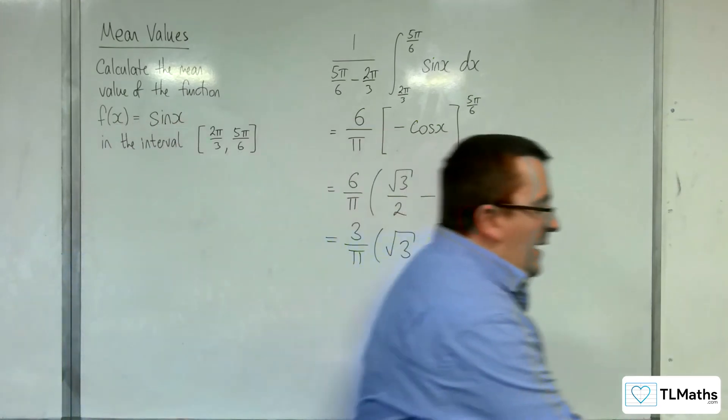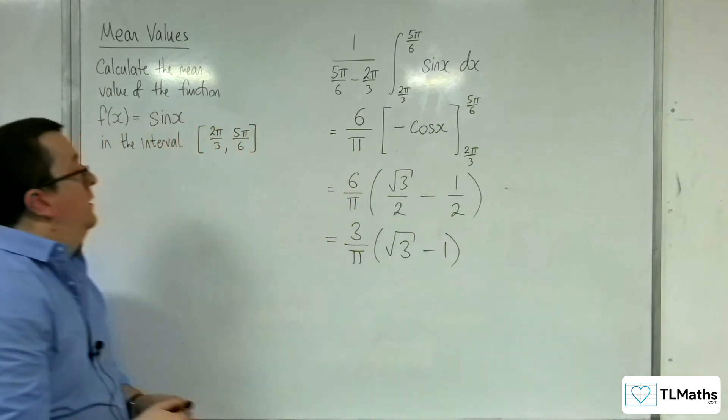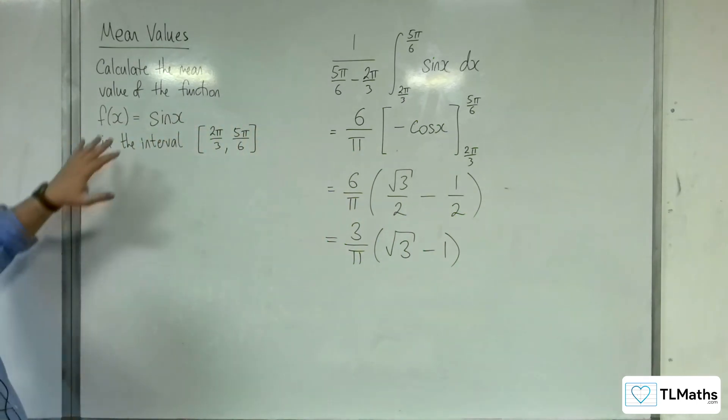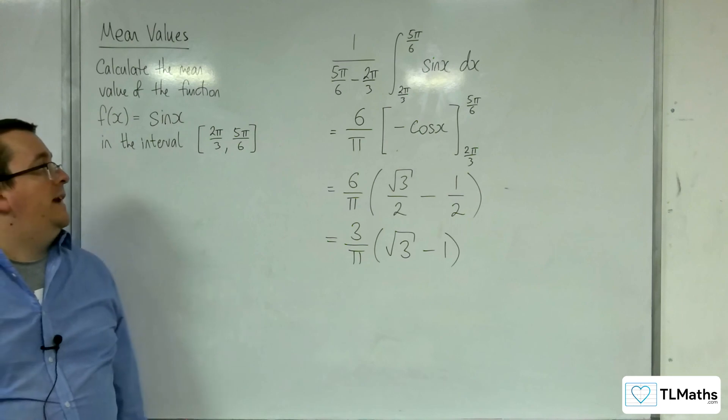So that is the exact value of the mean value of this function sine x between 2 pi over 3 and 5 pi over 6.